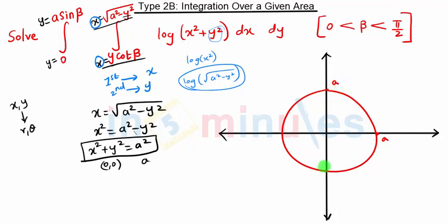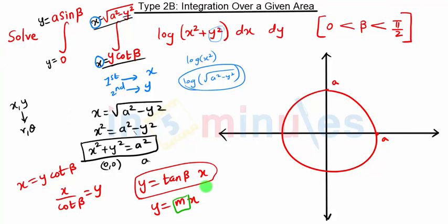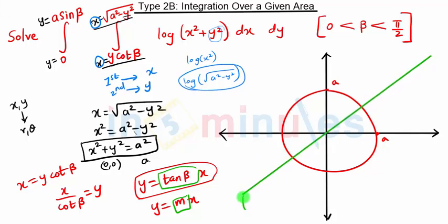Now for the lower limit: x equals y cot beta. We can write this as x divided by cot beta equals y, giving y equals tan(beta) times x. This equation is similar to y equals mx, which is a straight line passing through the origin with slope m. In our case, the slope is tan(beta), so this is a straight line passing through the origin. So we have y equals tan(beta)·x as the line, and x squared plus y squared equals a squared as the circle.